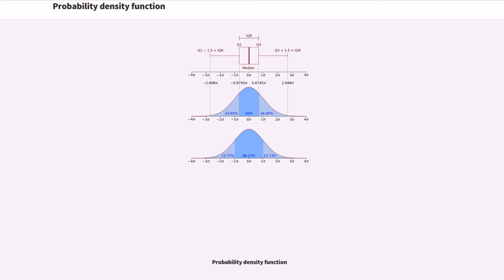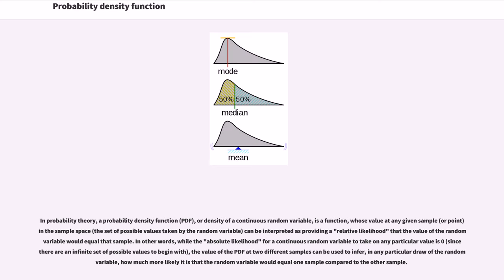Probability Density Function. In probability theory, a probability density function, or density of a continuous random variable, is a function whose value at any given sample in the sample space can be interpreted as providing a relative likelihood that the value of the random variable would equal that sample.